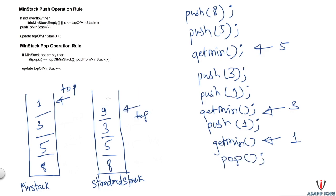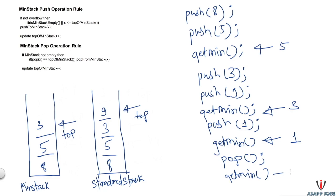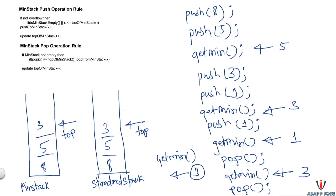Now let's start popping. Pop removes one from the top of standard stack, making nine the new top. The popped element (one) equals the top of min stack (one), so we pop from min stack as well — now three is the top of min stack. Calling getMin returns three, which is correct. Pop again removes nine from standard stack, but since nine does not equal three (top of min stack), we don't pop from min stack. GetMin still returns three — correct.